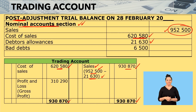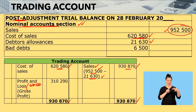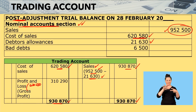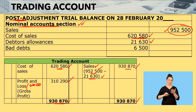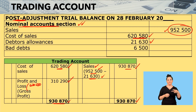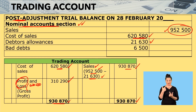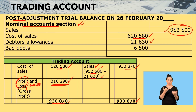Let me write it down so you can remember this. Cost of sales is 620,580. Subtracting that from 930,870 gives you 310,290 — that is your gross profit. We will then close this account off to the profit and loss account, and I will bring this 310,290 forward when I am doing the profit and loss account.